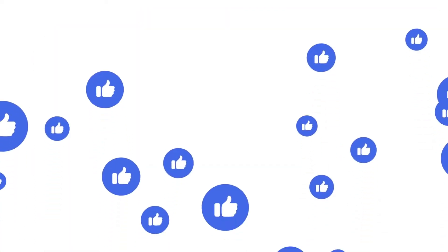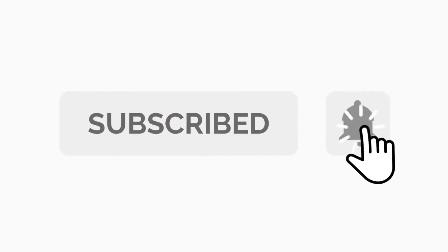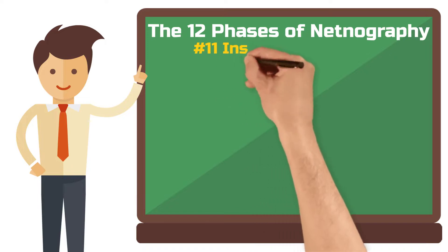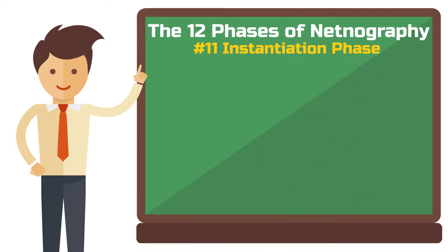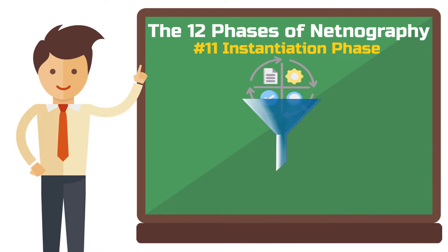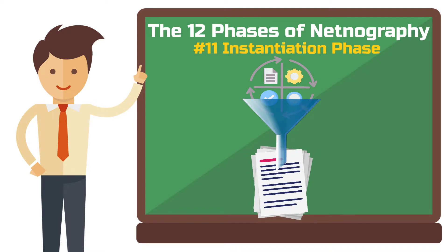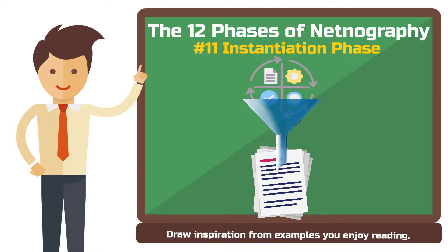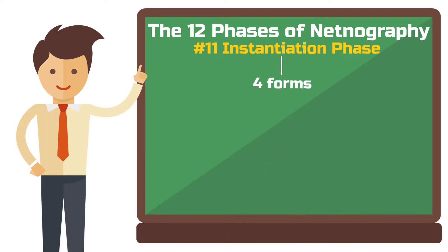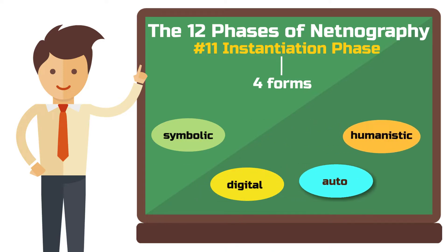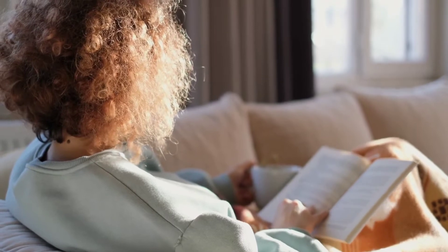Before we get to phase 11, please consider giving this video a like and subscribing to the channel if you want to see more of this type of content. Phase 11: The instantiation phase. In the penultimate phase, the focus is on shaping your netnography into a tangible form — for most of us, this means producing a research paper. Consider the best possible structure to present your netnography and draw inspiration from examples you enjoy reading. According to Kotzinets, there are four different forms of netnography instantiation: symbolic, digital, auto, and humanistic. You can dive into Kotzinets' book to acquaint yourself with them, assign your netnography to one of these types, and align your research paper accordingly. The presentation doesn't always have to be just an academic text — you can let your creativity run free.